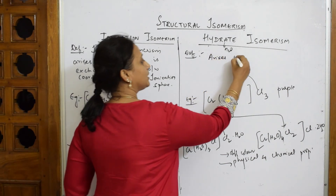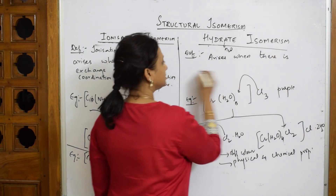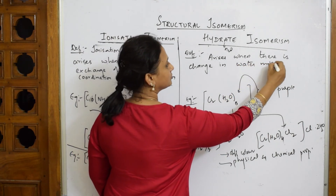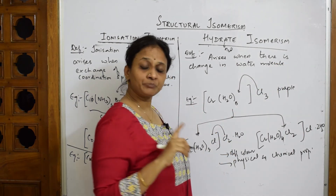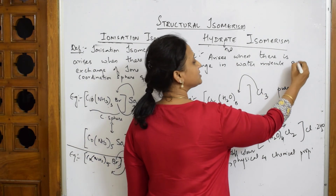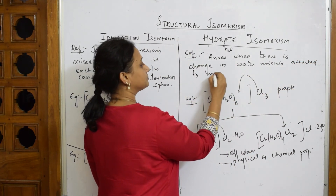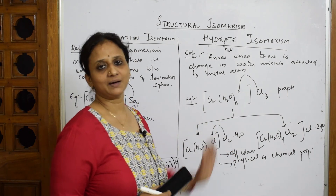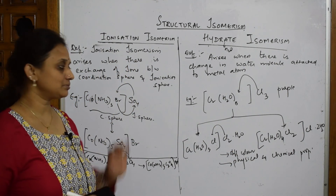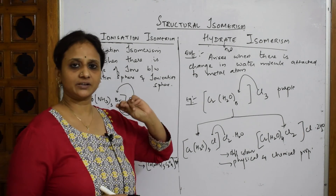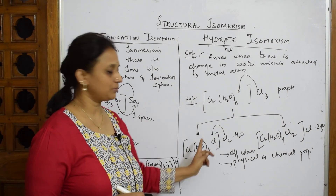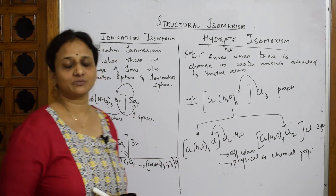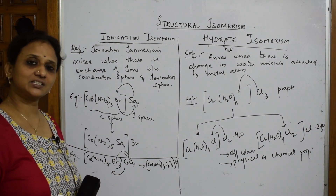Hydrate isomerism arises when there is a change in the number of water molecules attached to the metal atom between the coordination sphere and the ionization sphere. In the exam, if they give a complex, identify it as hydrate isomerism and shift water molecules accordingly. This concludes hydrate isomerism — let's move to the next type of isomerism.